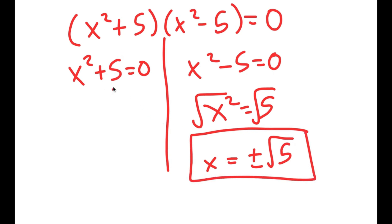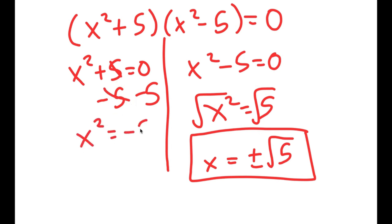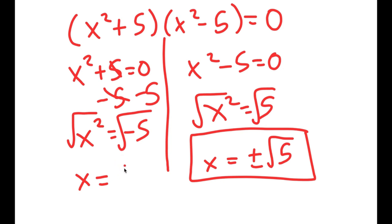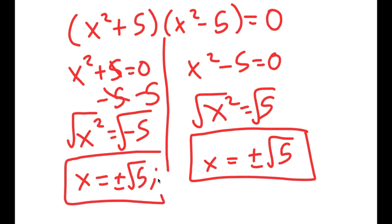For x squared plus 5 equals 0, I subtract 5 on both sides and get x squared equals negative 5. Taking the square root, I get x is equal to the square root of negative 5, which equals square root of 5 times i. So these are my four solutions to this equation.